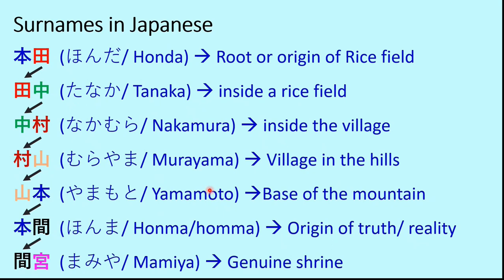Then we have 'ma' combined with 'miya', giving us Mamiya, which means 'genuine shrine.' The first symbol means genuine or true and the second symbol represents a Buddhist temple or shrine — so a very genuine or holy shrine, that is Mamiya. These are some very popular surnames in Japan still in use today. 150 years ago people started keeping these surnames, and their descendants and next generations naturally inherited them from their ancestors, parents, and grandparents — this is how these surnames propagated in Japanese society.